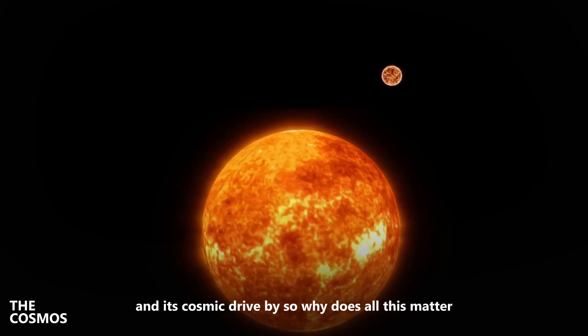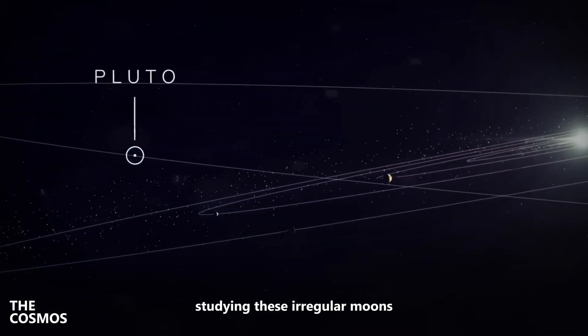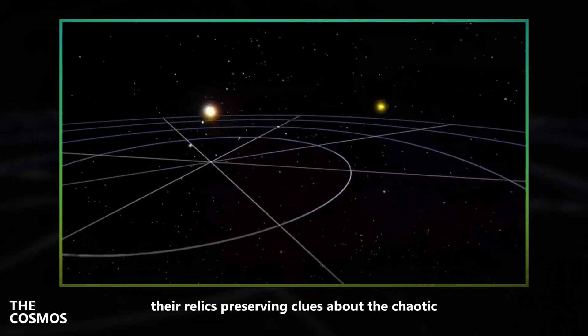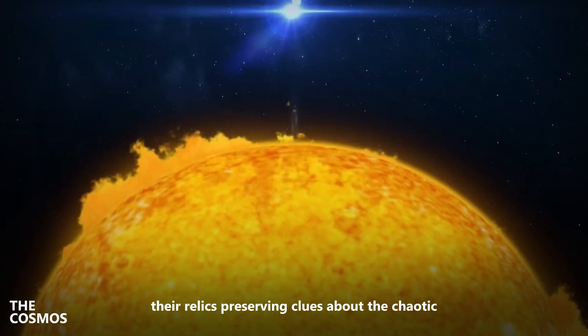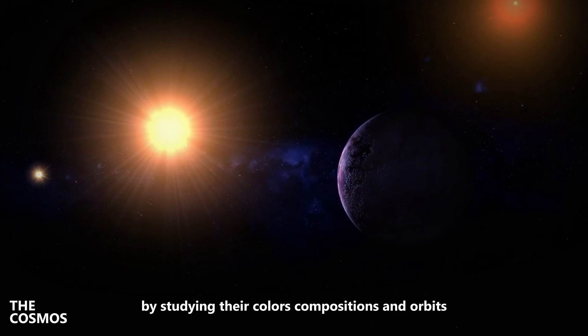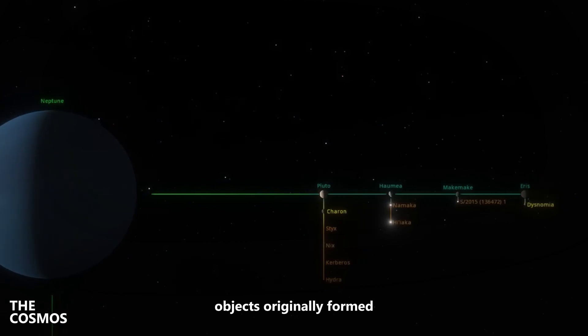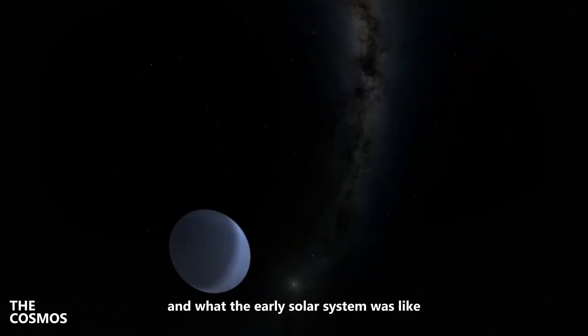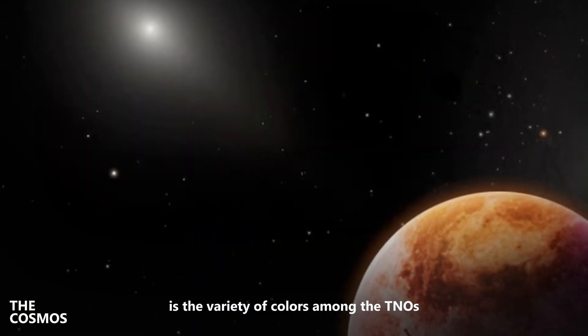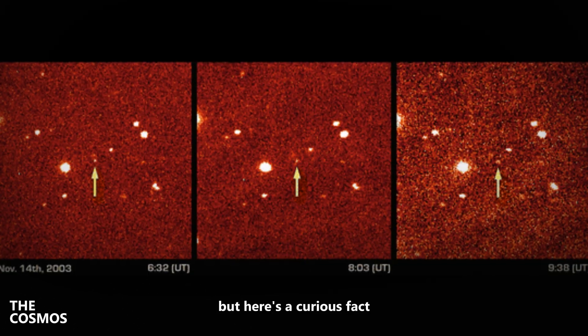So why does all this matter? Why should we care about these weird orbits and oddball moons? Well, studying these irregular moons is like opening a time capsule from the early days of the solar system. They're relics, preserving clues about the chaotic forces that were at play billions of years ago. By studying their colors, compositions, and orbits, scientists can piece together a picture of where these objects originally formed and what the early solar system was like. For instance, one of the standout features of the outer solar system is the variety of colors among the TNOs, ranging from gray to very red. But here's a curious fact.